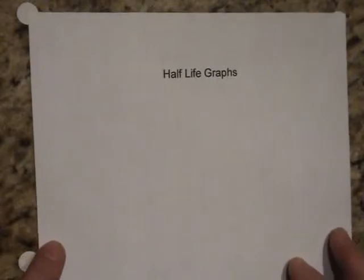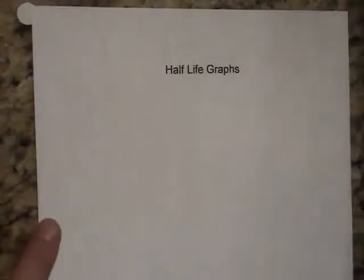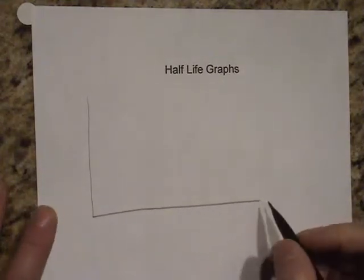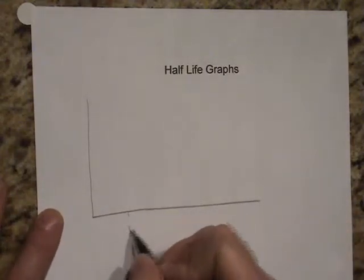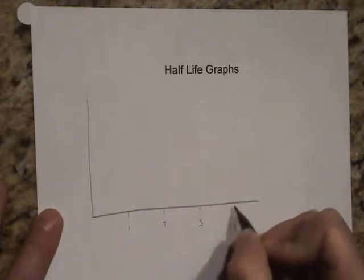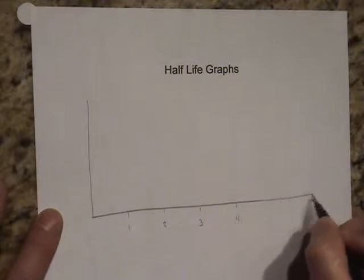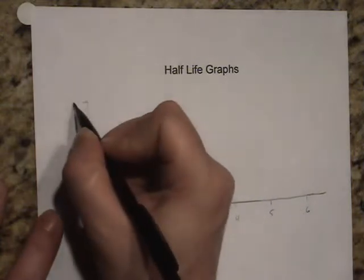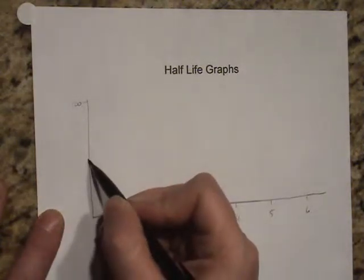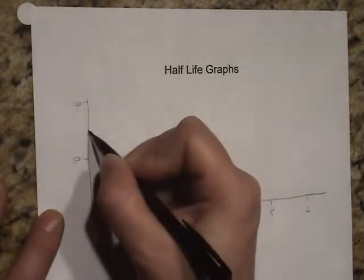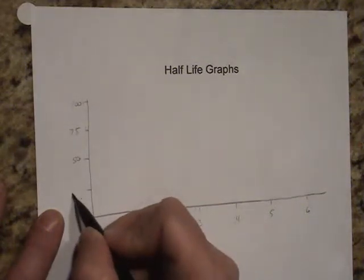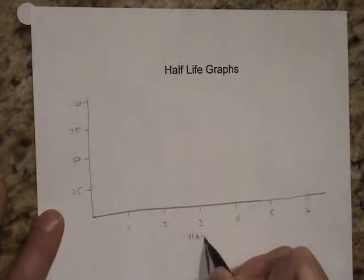And the way that the graphs work is like this. So I'm going to draw two different graphs, so make sure to leave enough room on your paper. So we're going to count this in half-lives. One, two, three, four, six. And let's start up here at 100%, and we'll find the halfway point. This is about 50. Find the halfway point again. That's 75. We'll find the halfway point again. Here's 25. So this is half-lives.